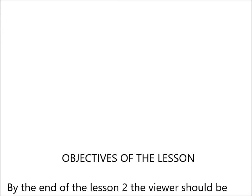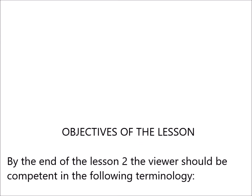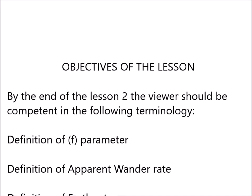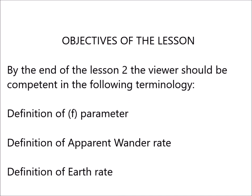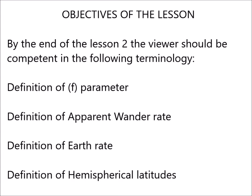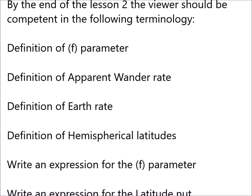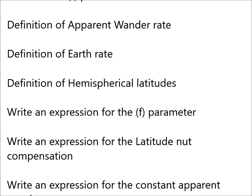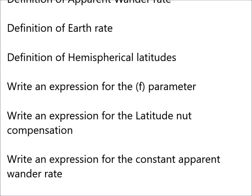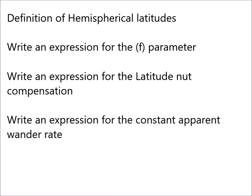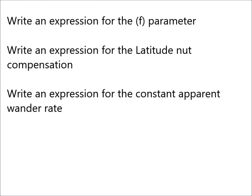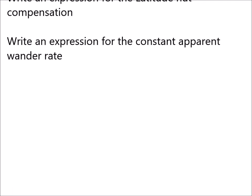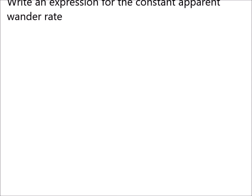Objectives of the lesson. By the end of lesson two, the viewer should be competent in the following: definition of the F-parameter; definition of apparent wander rate; definition of earth rate; definition of hemispherical latitude; writing an expression for the F-parameter; writing an expression for the latitude nut compensation; and writing an expression for the constant apparent wander rate.